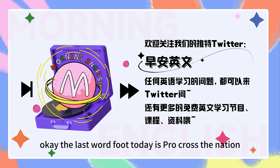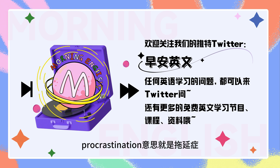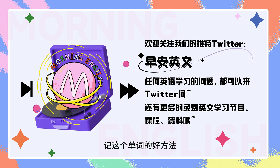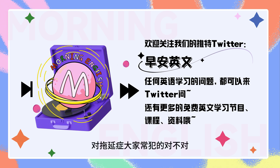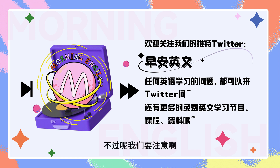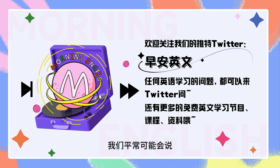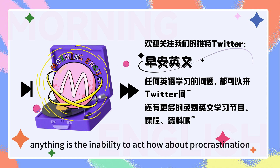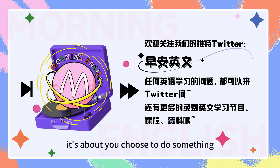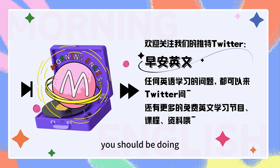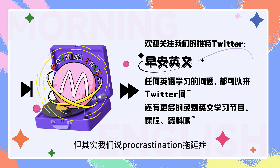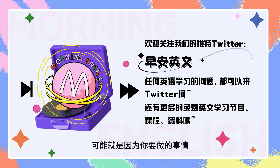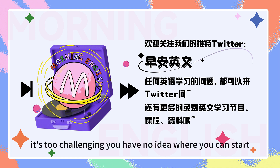The last word for today is procrastination. Procrastination，意思就是拖延症。我们可以把它分成三个部分来记：pro-crast-ination。拖延症和懒之间还是有区别的。I think being lazy means you don't want to do anything — it's the inability to act. How about procrastination? It's about you choose to do something else instead of the task that you know you should be doing. 所以本来今天要交论文了，但你却去选择画画了，对吧？拖延症有很多原因，可能就是因为要做的事情太有挑战性了，you have no idea where you can start.